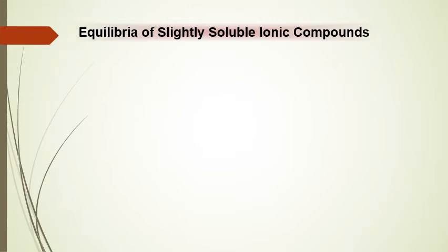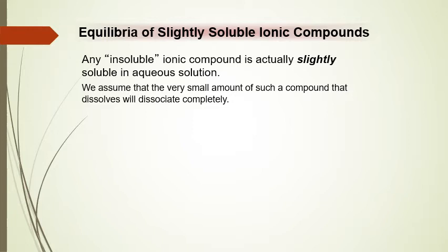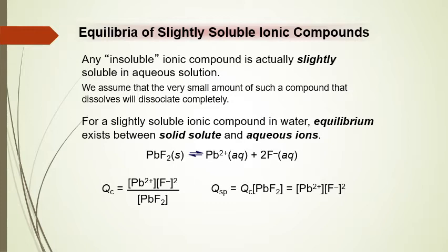Now let's look at the relationship between equilibria for slightly soluble ionic compounds and the saturation concept. Any insoluble ionic compound is slightly soluble in aqueous solution, reaching its saturation point quickly. We assume the very small amounts that dissolve dissociate completely. For any slightly soluble ionic compound, we can determine the saturation level by looking at the value of Q — the non-equilibrium condition.